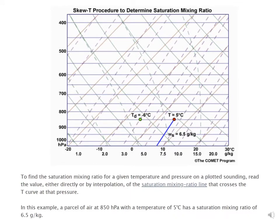Next we'll use the skew-T diagram to determine the saturation mixing ratio. Recall that the saturation mixing ratio is the maximum amount of water vapor that can exist at a given temperature and is independent of the dew point temperature. For the same example — temperature at 5 degrees C and pressure at 85 kilopascals — you use the same procedure but follow the isohume down from the temperature instead of the dew point. Following that line parallel to the dashed purple lines down to the axis gives a saturation mixing ratio of 6.5 grams per kilogram.